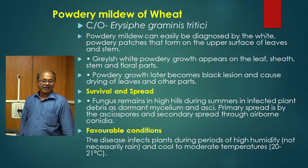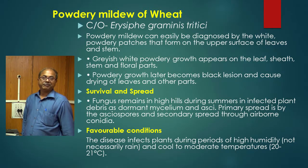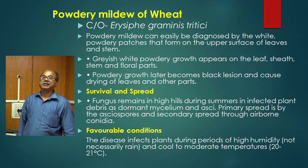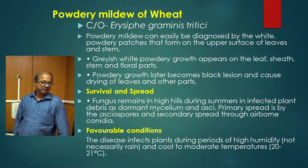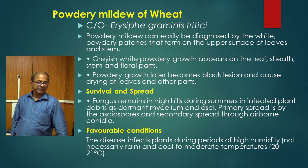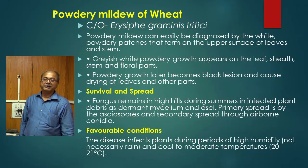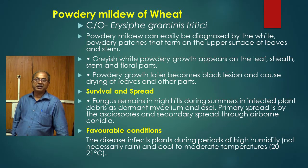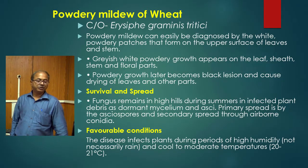The powdery growth later becomes black lesions and causes drying of leaves and other parts. Erysiphe is an ascomycetous fungus and is basically an obligate parasite. The fungus remains in high hills during summers in infected plant debris as dormant mycelium and ascospores. Primary spread is by ascospores and secondary spread is through airborne conidia. The disease infects plants during high humidity, cool to moderate temperatures of 20 to 21 degrees centigrade.